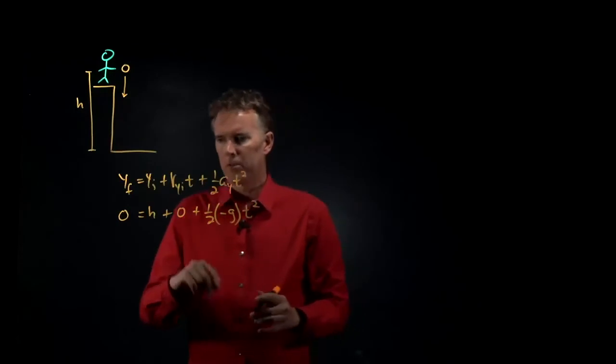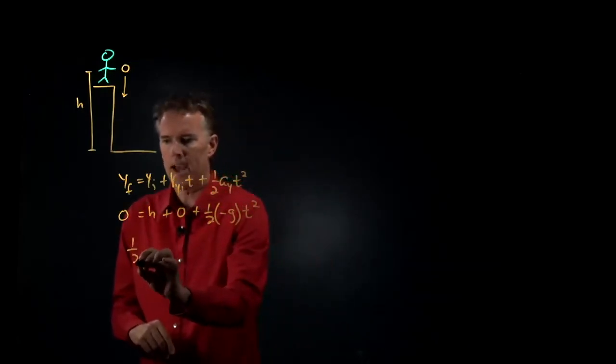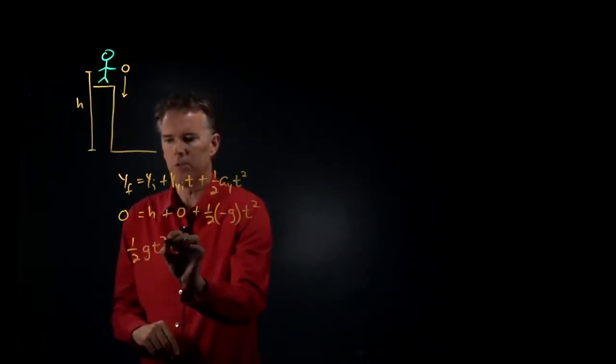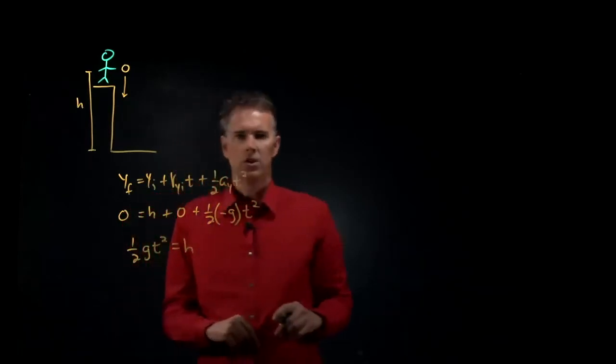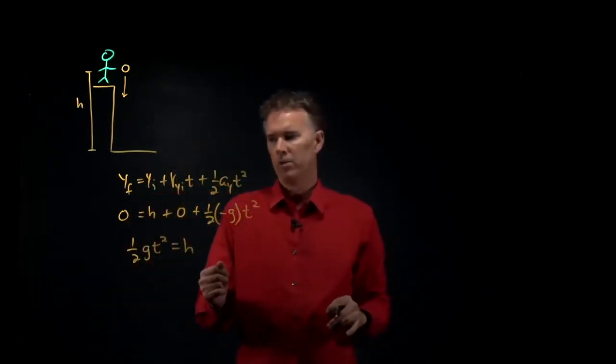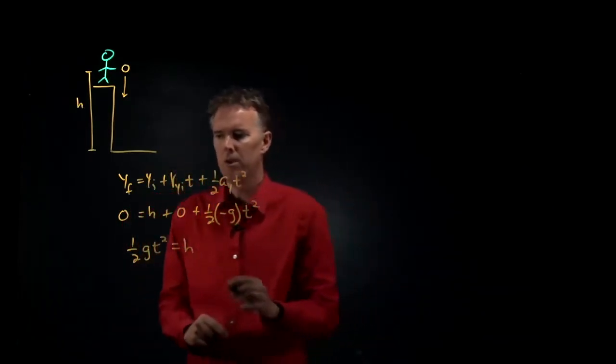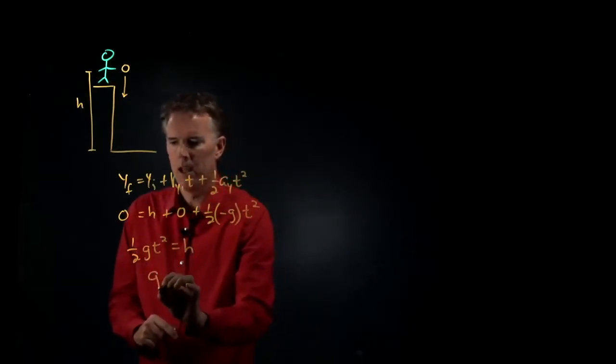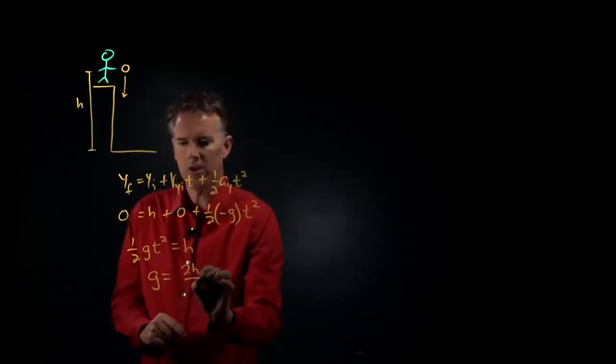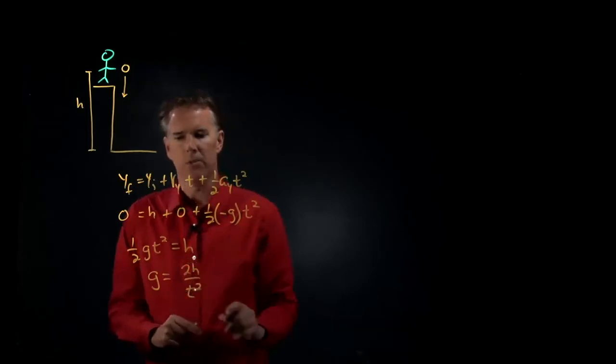We can simplify this equation quite a bit. We get one half g t squared equals h. Now let's solve this equation for g. If I multiply by 2 and divide by t squared, I get g equals 2h over t squared.